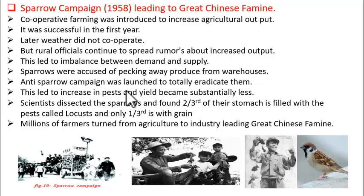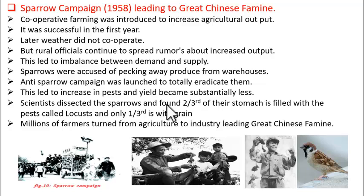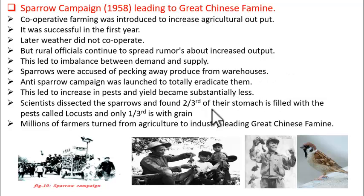That is the reason why there was a substantial loss in agricultural output. This report was given to the government, but it was already too late for them to take any other decision. So what they did was import sparrows from Russia.